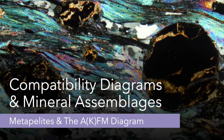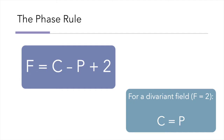In this metamorphic petrology video, we will learn how to interpret the AFM compatibility diagram for metapelites. The phase rule tells us that the number of degrees of freedom equals the number of components minus the number of phases plus two. Most metamorphic rocks we encounter will come from a divariant field, in which case the phase rule can be reduced to c equals p.